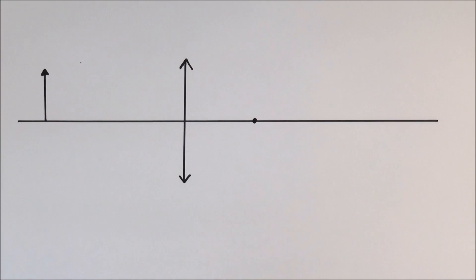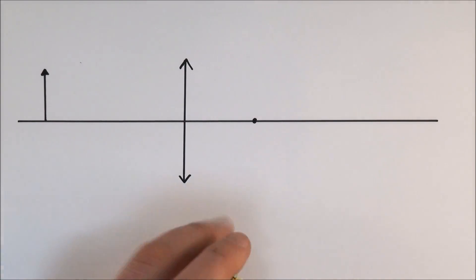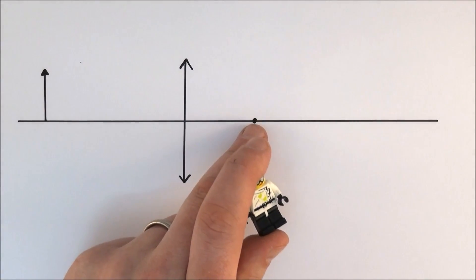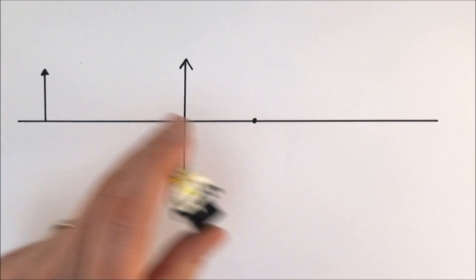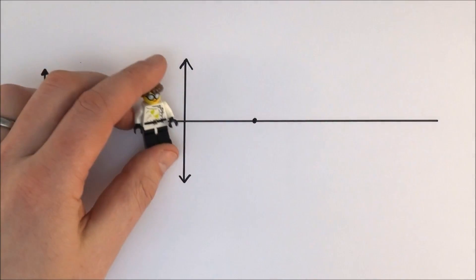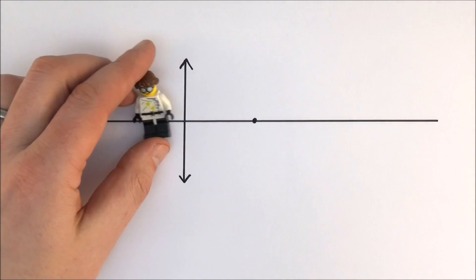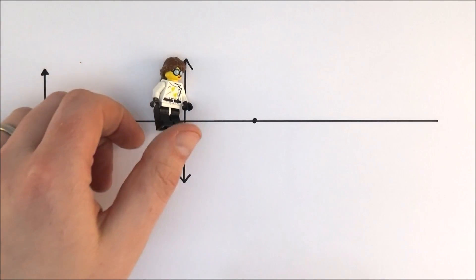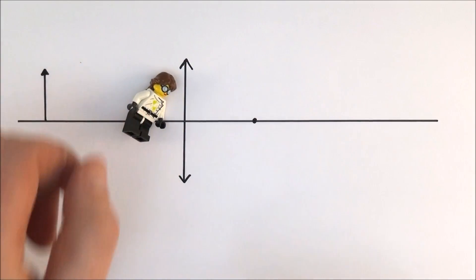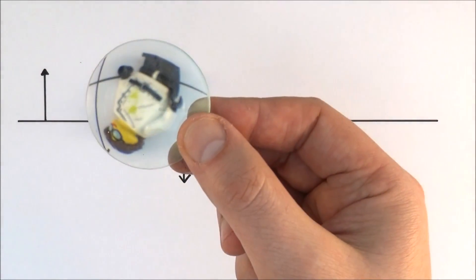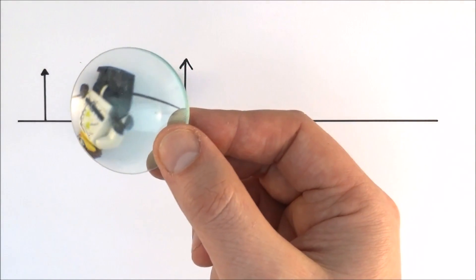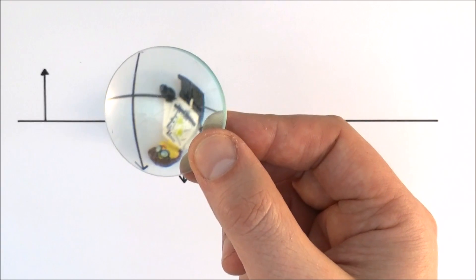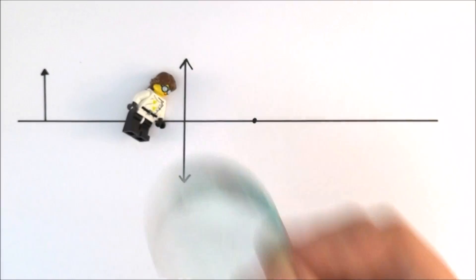This video is about how to construct a ray diagram to work out where an image is formed. In this case, we have a focal point and the object quite far away. When you look at something which is quite far away from a converging lens, the image is basically upside down and can be magnified.